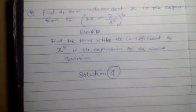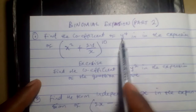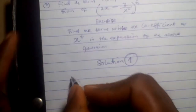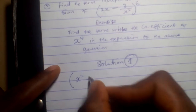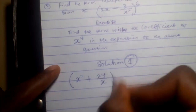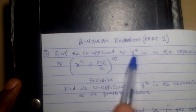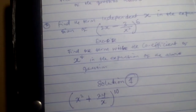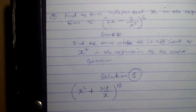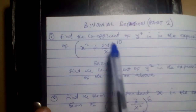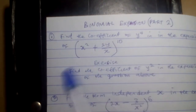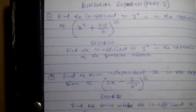Solution 1. The question says: find the coefficient of y to the power 4 in the expansion. So we have to find the term that has the coefficient of y to the power 4 when we expand. The question remains: which term has this coefficient? I don't know the term that has this coefficient. So I'm going to use the normal process of solving.